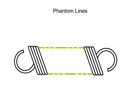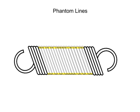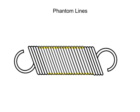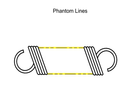Finally, phantom lines are used to show repeated detail. In this view, a spring is depicted. Since the coils of the spring are all the same, it is not necessary to draw them all. Instead, phantom lines are used to illustrate that the coils continue as originally shown.